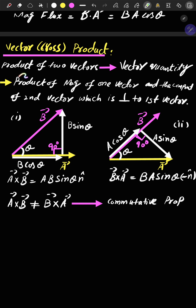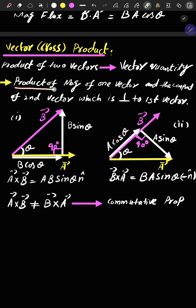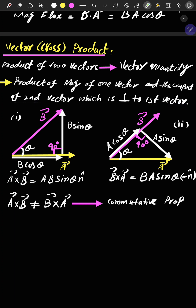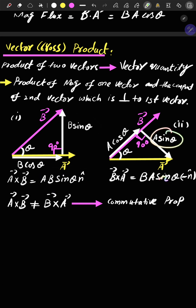On the other hand, the vector product is the product of two vectors which gives a vector quantity. It is found by the product of the magnitude of one vector and the component of the second vector which is perpendicular to the first vector. This time we get the perpendicular components, giving AB sin theta and BA sin theta.